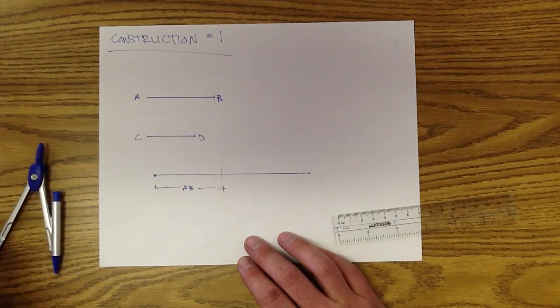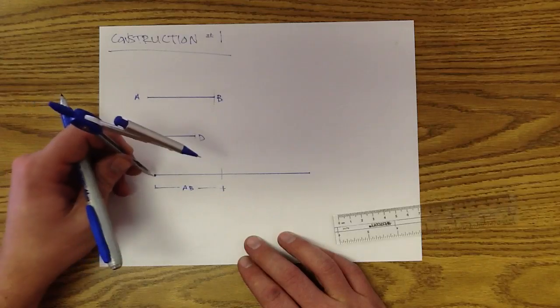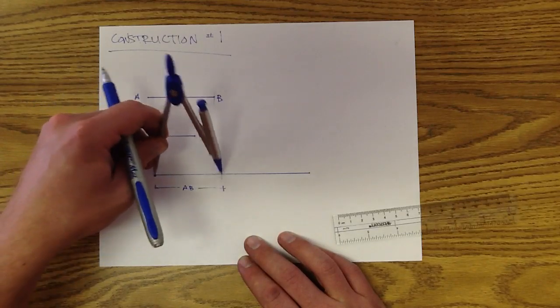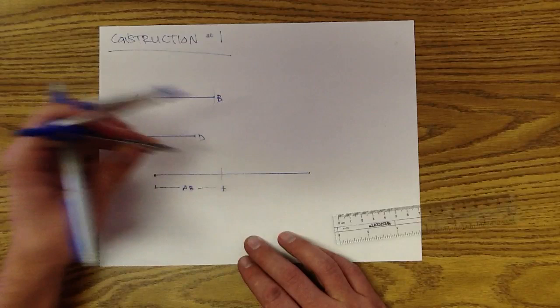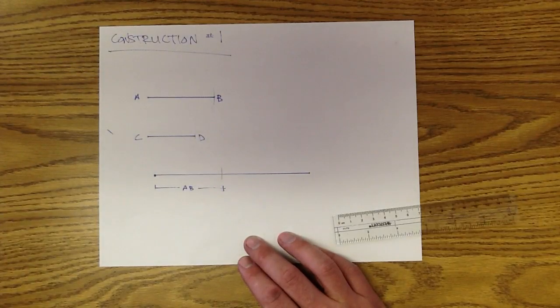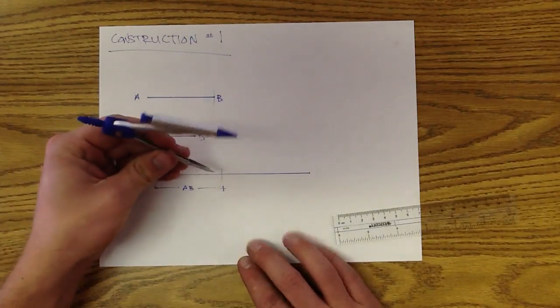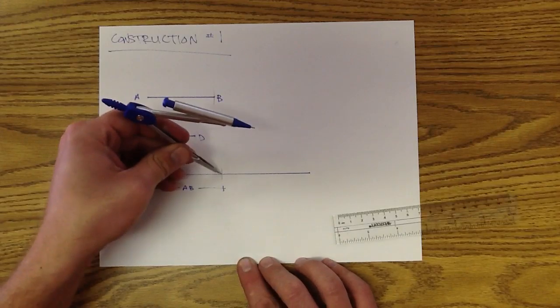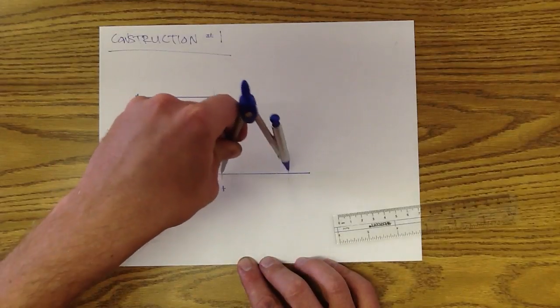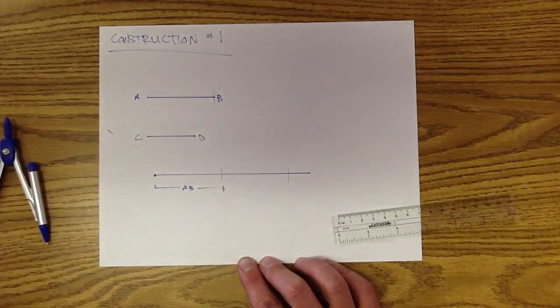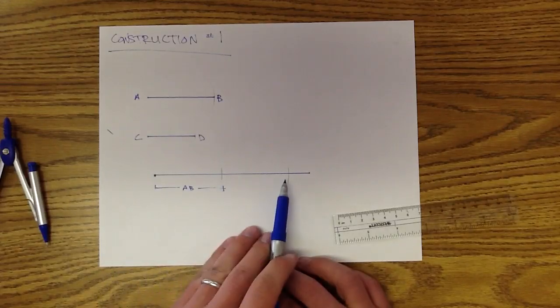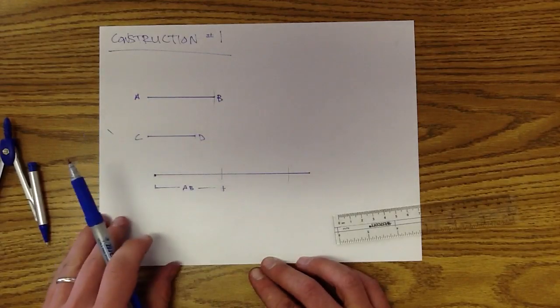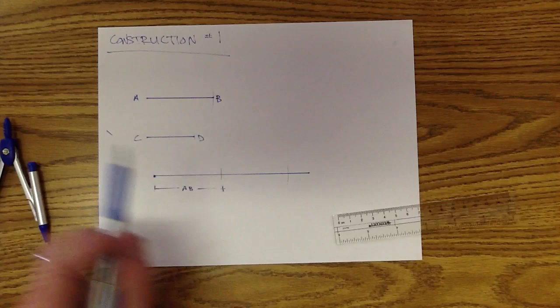If I wanted to do two ABs, I would say, all right, this would be one AB. Now pick up my point, put my point on this right here, that intersection, and if I draw another arc right here, the length of this segment plus this segment would be twice AB, twice the length of AB, or two AB.